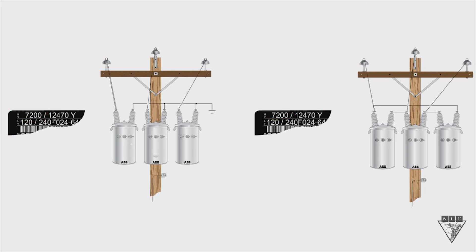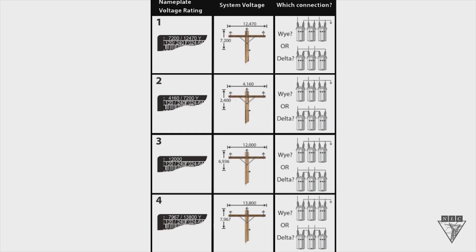Let's move to a different page and do some practice with these connections. In this column we've got our nameplate, the next column over is our system voltage, and the right-hand side is what our connection is going to be — either a Y or a delta. We look at our nameplate and remember it's the smaller number of the two, so we focus on that 7,200 volts. To get 7,200 volts, it requires a phase-to-ground connection, which means on our primary side we're going to make a Y connection.